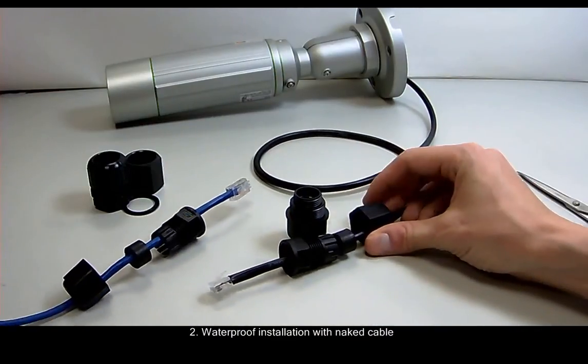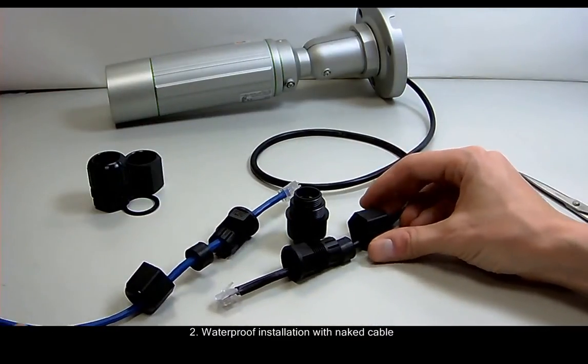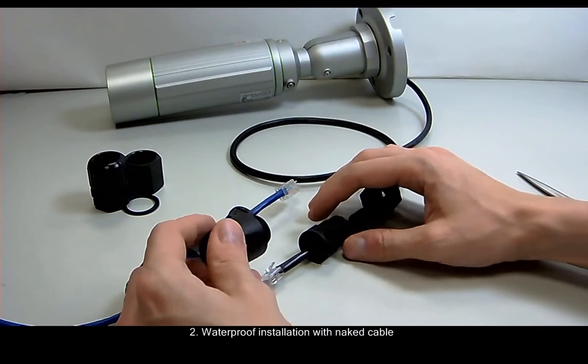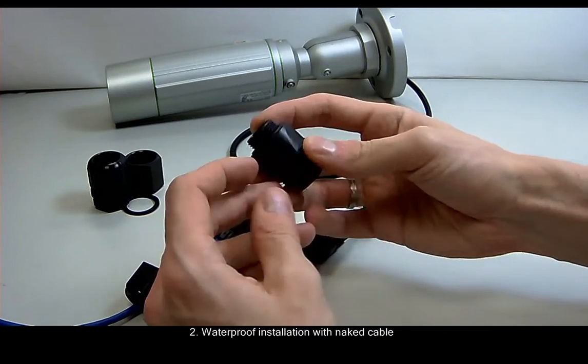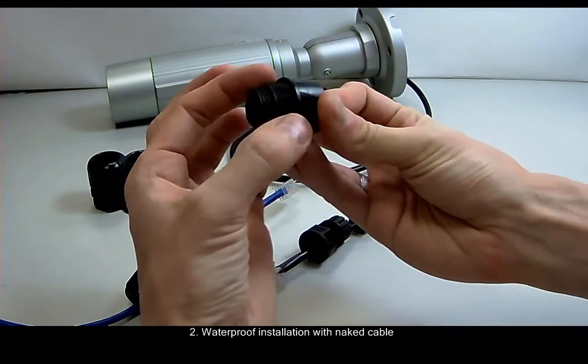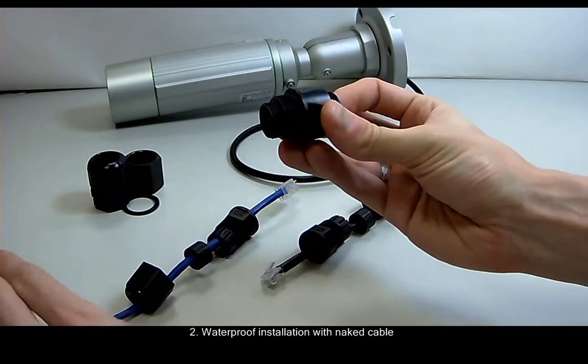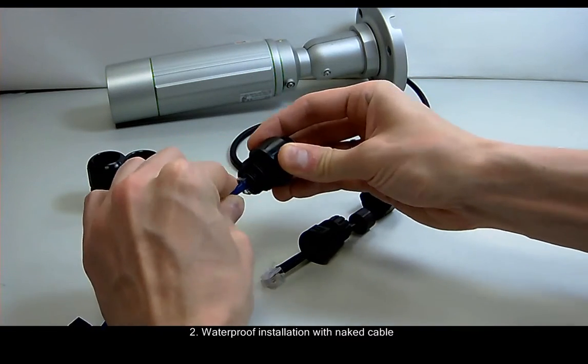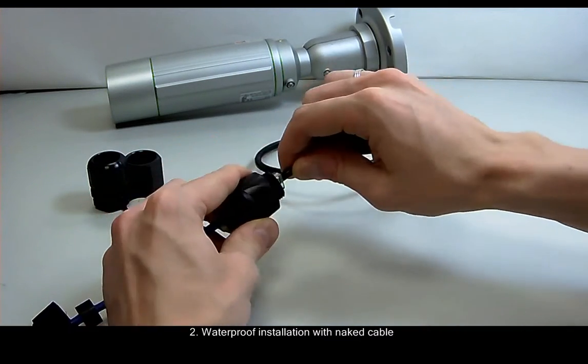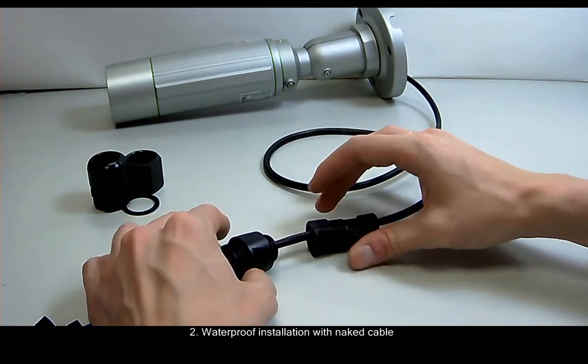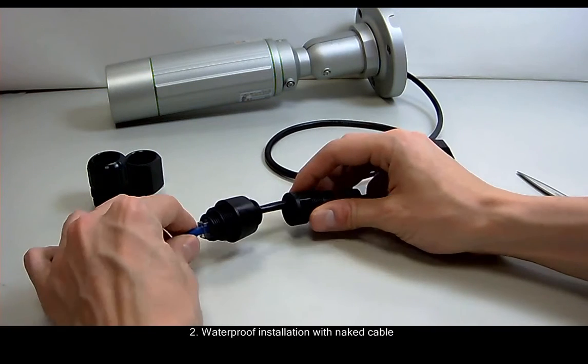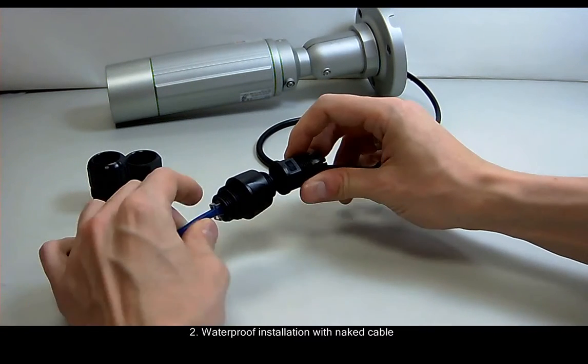The first step we have to now do is use this two-sided connector and plug both of the cables into that connector. The thicker side will be facing the installation site, not the camera. The reason is that we will use that thicker side also on the third type of installation where it really matters. In this case, it doesn't matter.